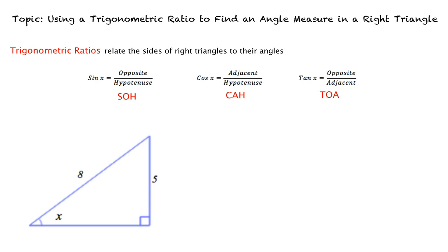We will use these ratios to help us find the angle measure. More accurately, we will use the inverse of sine, cosine, and tangent to find the angle measure. These can also be written as arc sine, arc cosine, and arc tangent.